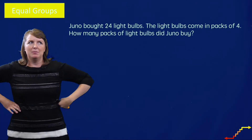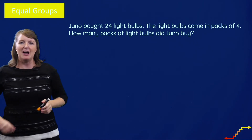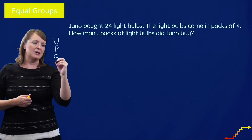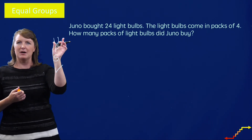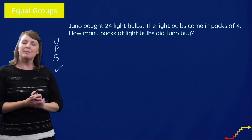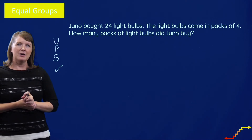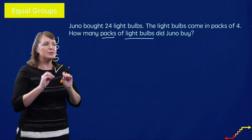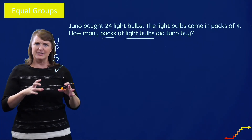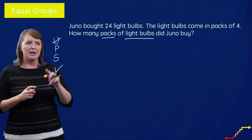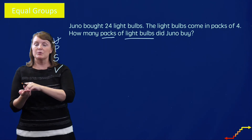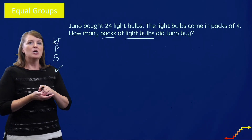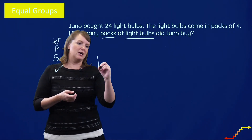Let's look at another equal groups problem. I see a mix of numbers and words, so I'll use my UPS Check attack strategy. Understand the problem: Juno bought 24 light bulbs. The light bulbs come in packs of four. How many packs of light bulbs did Juno buy? I'm focusing on how many packs she bought. Now I need to make a plan — is this an equal groups problem with groups and an equal number in each group? Yes — I've got packs with the same number of light bulbs in each pack. I'll use my equal groups graphic organizer.